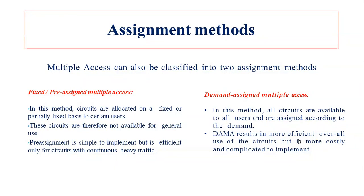In newer generation technologies we mostly follow the demand assigned method. The first method is Fixed or Pre-Assigned Multiple Access. In this method, circuits are allocated on a fixed or partially fixed basis to certain users only — few people will have access. These circuits are therefore not available for general use. Fixed pre-assigned multiple access is very simple to implement but is efficient only for those who have that access.